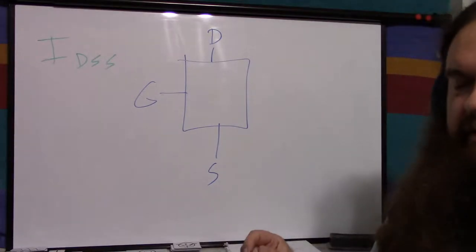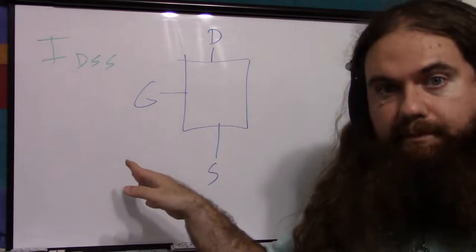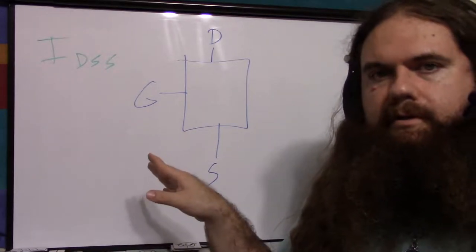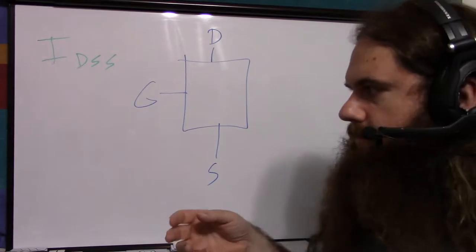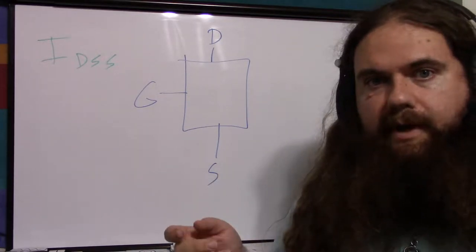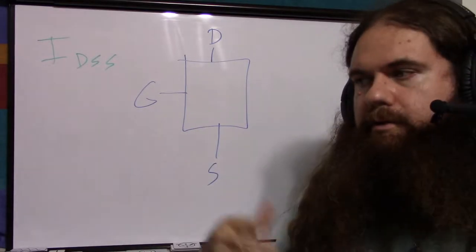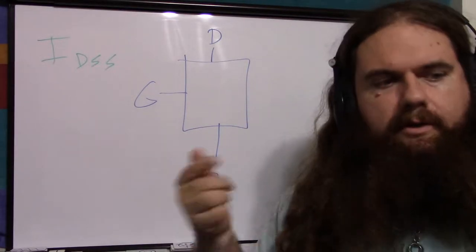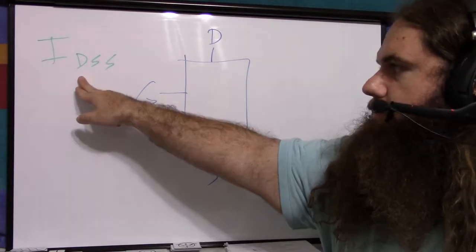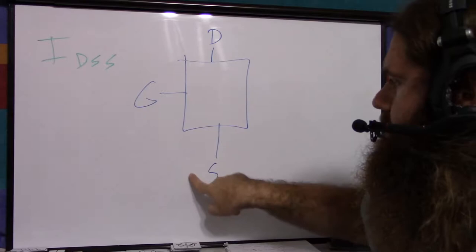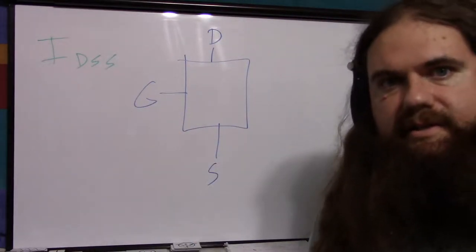Because differences in manufacturing will cause different values, if it matters you'll need to measure every single one individually. If all you care about is approximate values — especially if you're using them as a switch where you just care about off and on — you can use the typical values from the spec sheet. IDSS is the maximum current that will go through by default with no gate-to-source voltage applied.